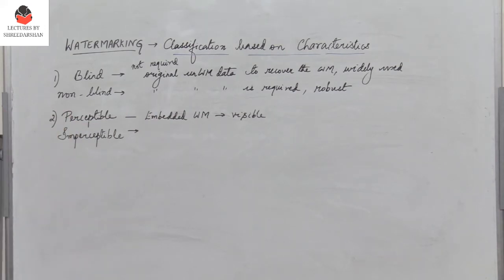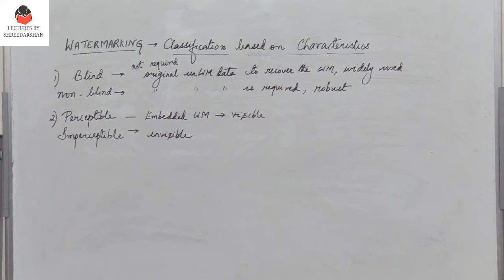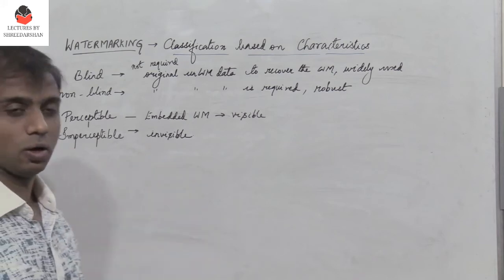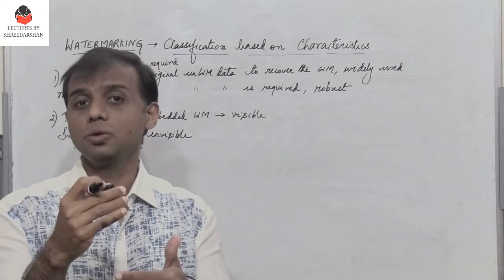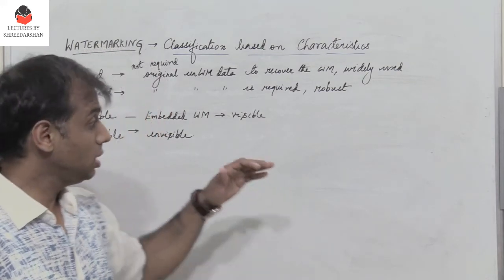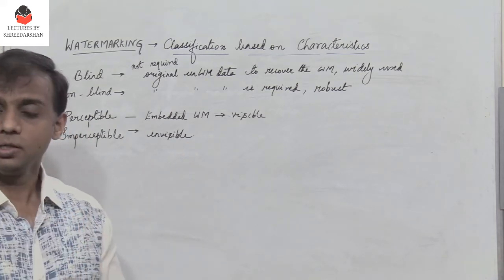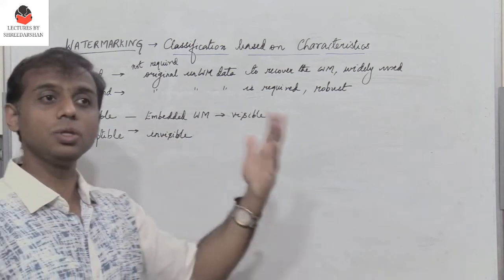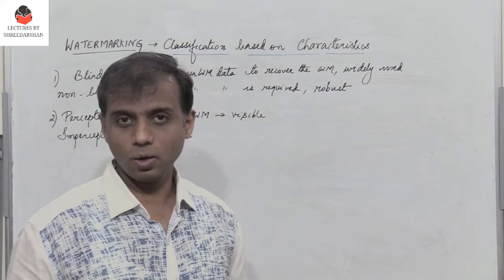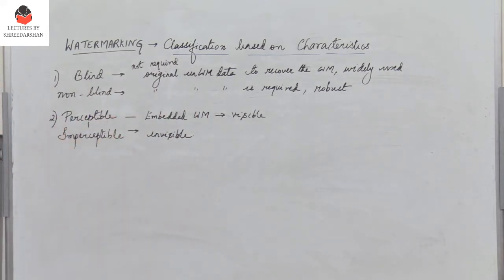An imperceptible watermark is invisible to the human eye, and the process of embedding it into the host image is done using sophisticated algorithms. The watermark is embedded such that the watermarked image and the unwatermarked image look almost the same to the human eye. Such a technique is referred to as imperceptible watermarking.